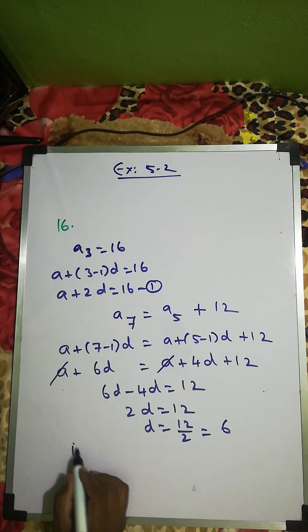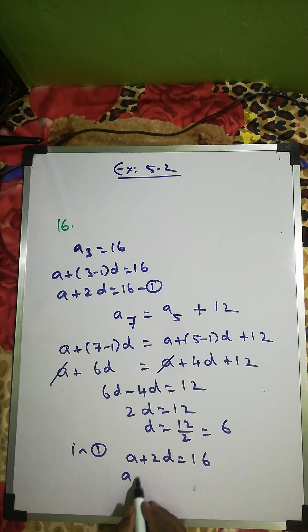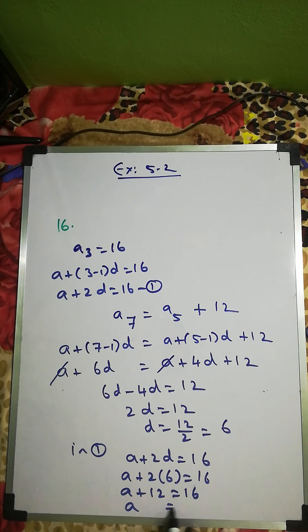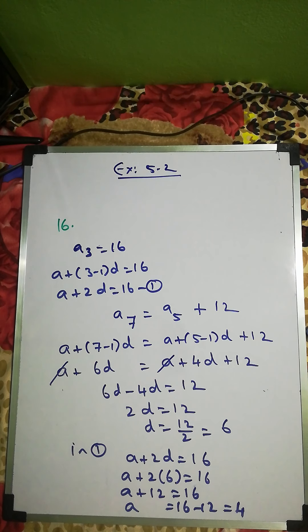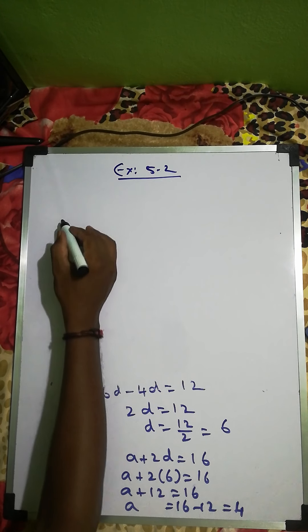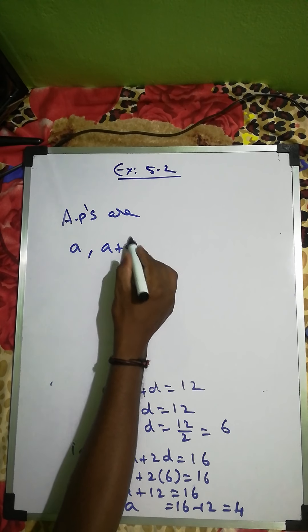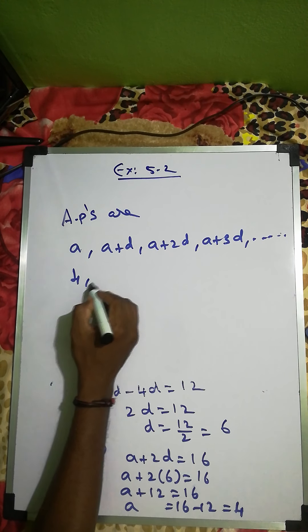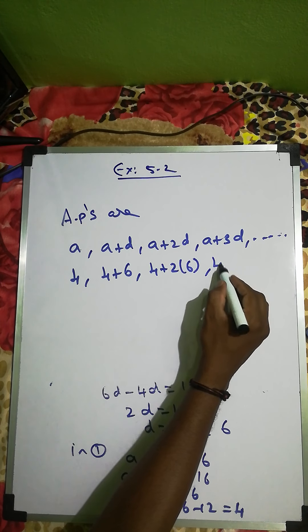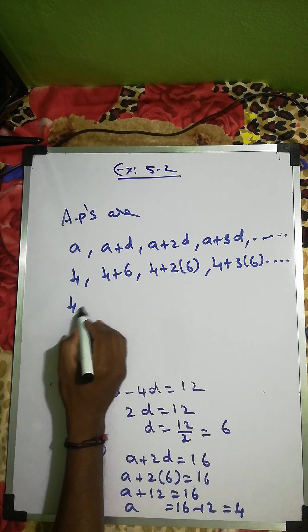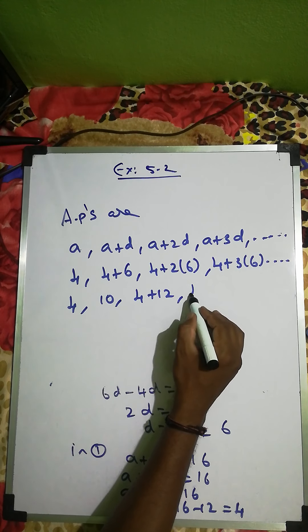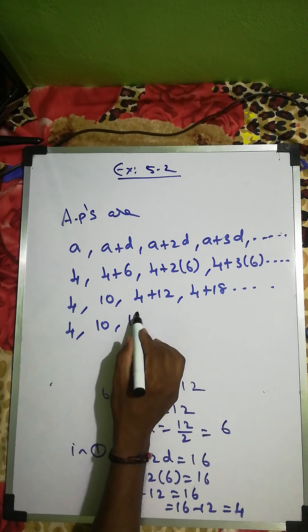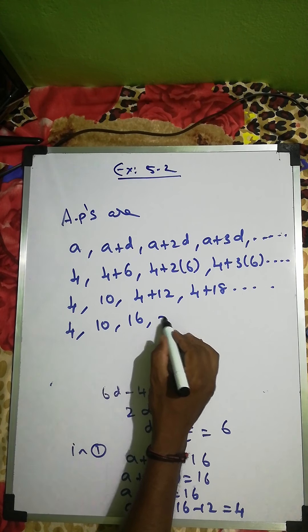Substituting d = 6 into equation one: a + 2×6 = 16, so a + 12 = 16, giving a = 4. Now we write the AP using the formula a, a+d, a+2d, a+3d: substituting a=4, d=6 gives 4, 10, 16, 22. Therefore the AP is 4, 10, 16, 22.